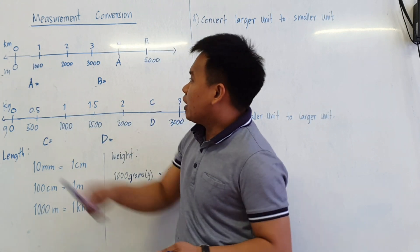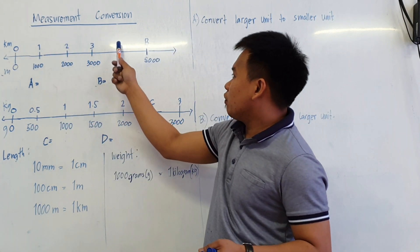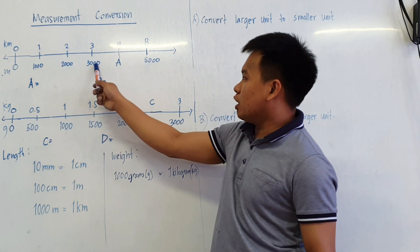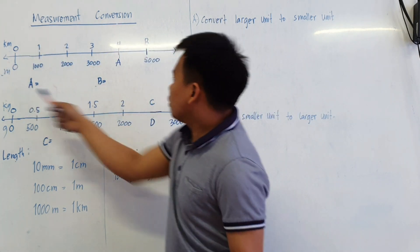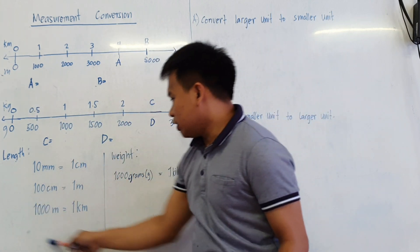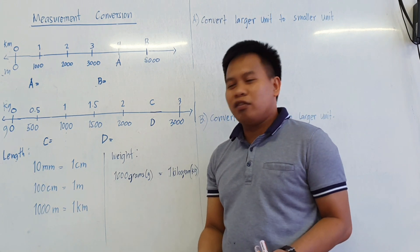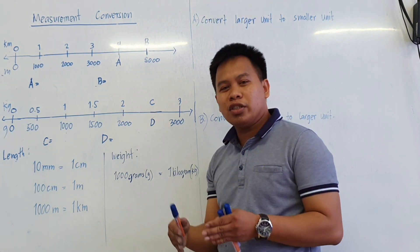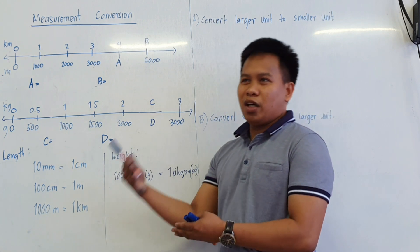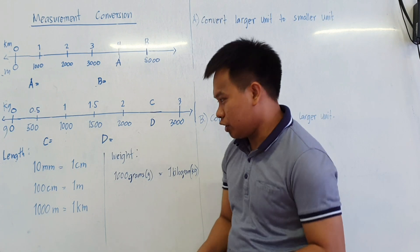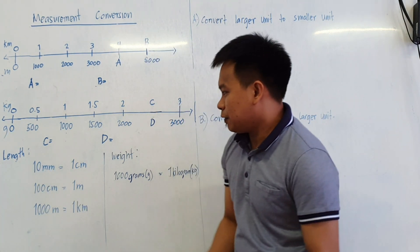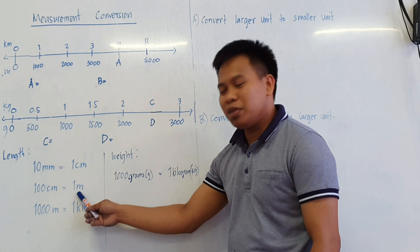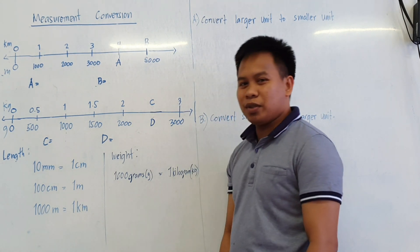So we have the number line here. We have 0, 1, 2, 3, 4, and then for the meters we have 1,000, 2,000, 3,000, and then 5,000. Before we find what A and B are, we'll go here first. This is the conversion or the equivalent of a measurement. The equivalent from a larger unit to smaller unit, or from the smaller unit to bigger unit. So we have here: 10 millimeters equals 1 centimeter, 100 centimeters equals 1 meter, and 1,000 meters equals 1 kilometer.